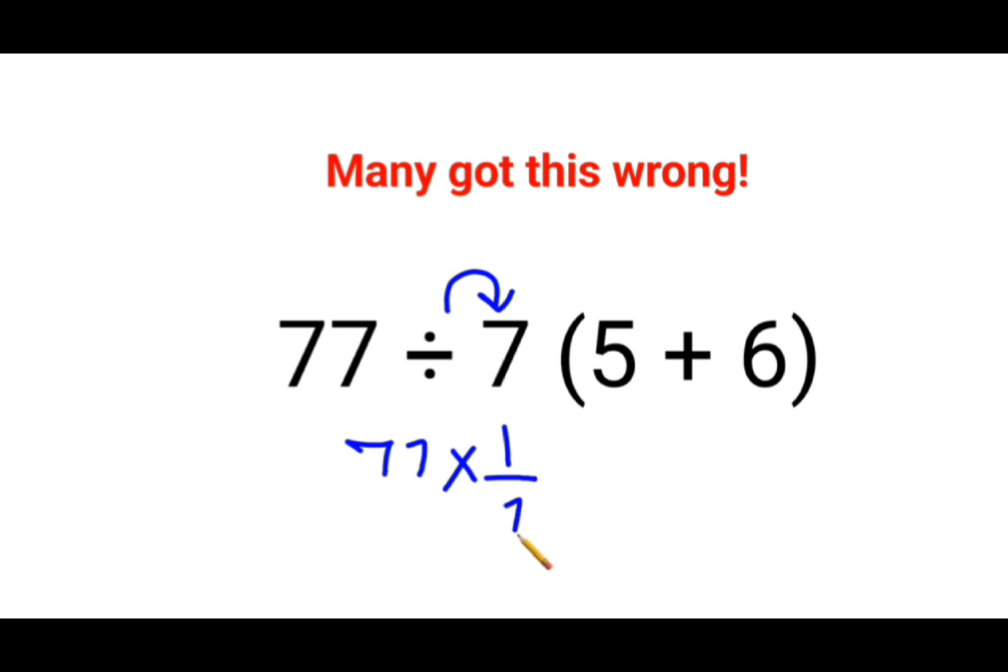So this will be 1 upon 7. Then since there is no sign between 7 and the bracket, obviously there is a multiplication sign. And then we will solve the bracket as well, which is 5 plus 6, that gets you 11.